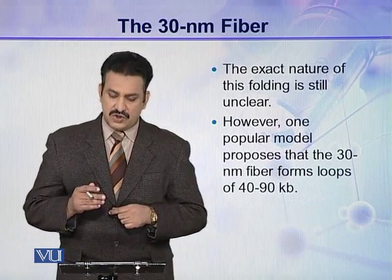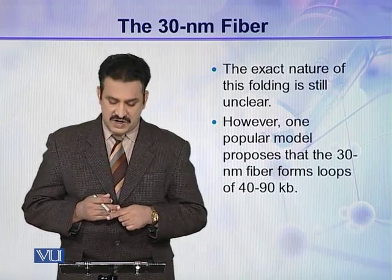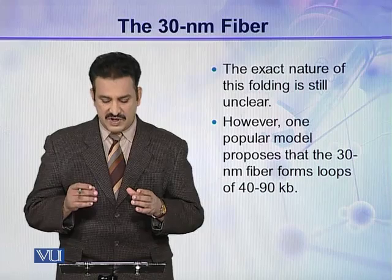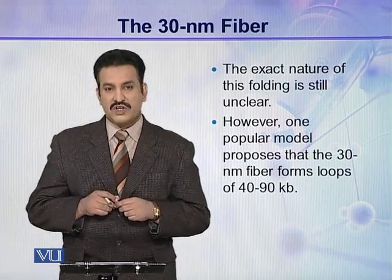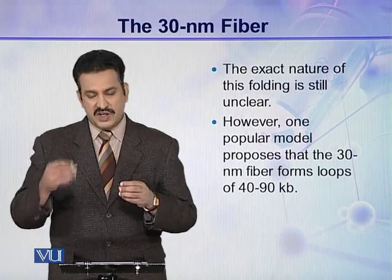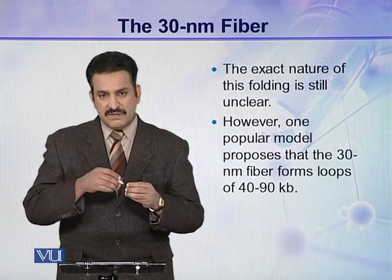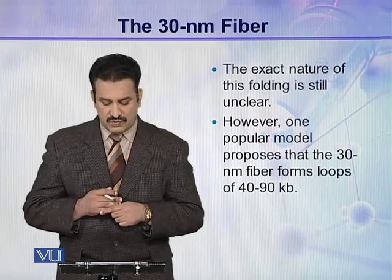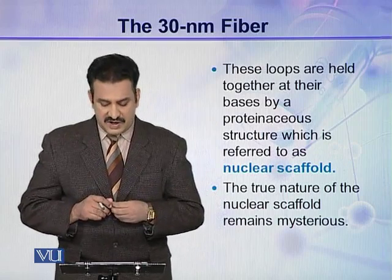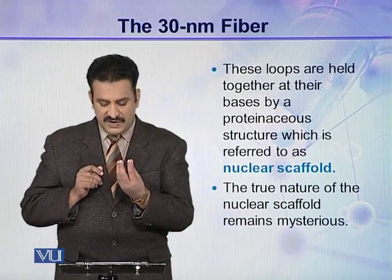The exact nature of this higher order folding is still unclear. However, some popular models propose that the 30 nanometer fiber forms loops of about 40 to 90 kilobases long. These 30 nanometer fibers are further folded or condensed into loops, each loop being about 40 to 90 kilobases long. These loops are held together at their bases by a proteinaceous structure referred to as the nuclear scaffold.